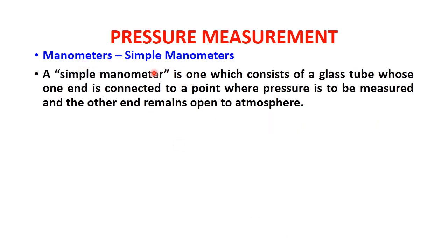Now we will start with simple manometers. A simple manometer consists of a glass tube whose one end is connected to the point where pressure is to be measured and the other end remains open to the atmosphere. One end connects to the measurement point, while the other is kept open to the atmosphere — this is the basic working principle of a simple manometer.